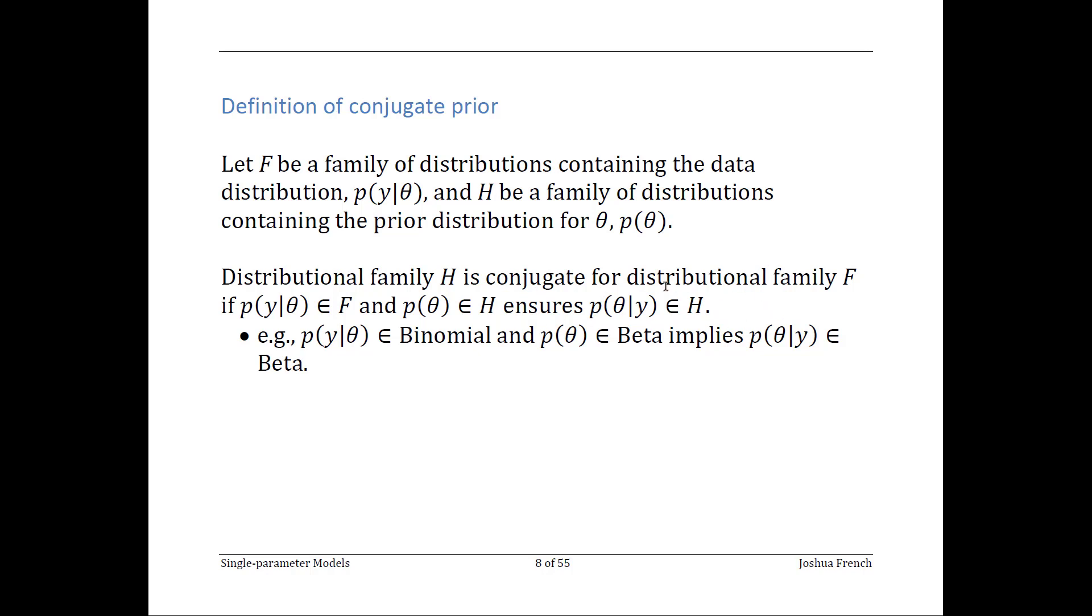One of the best known examples of a conjugate pair is that a binomial data distribution and a beta prior distribution will always result in a beta posterior distribution.